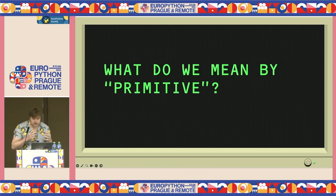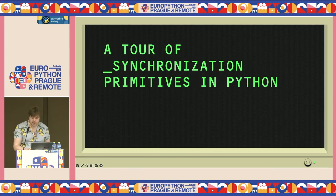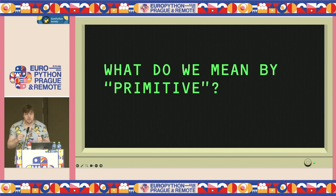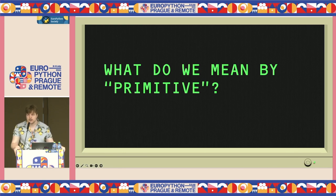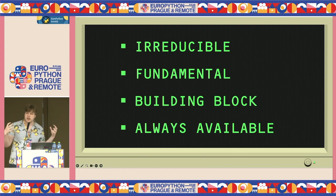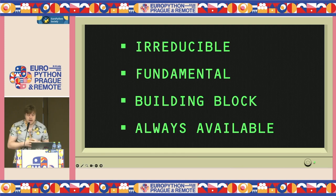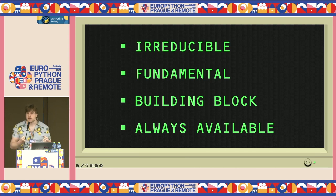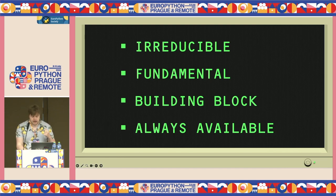The title is 'synchronization primitives' — let's unpack that. When we talk about primitives in a programming language context, we're thinking about things that are irreducible: we can't really break them down into anything smaller. They're small, compact units — fundamental building blocks that are always available in these kinds of languages.